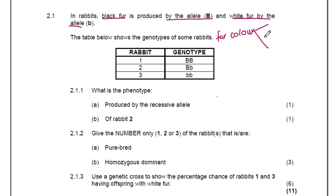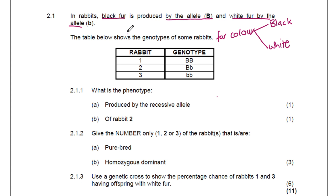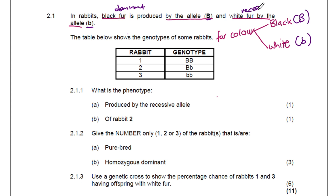Now the alleles, which are the alternative forms of the gene, can either be black or white. The letters given are not just for show — they are there for a reason. The black fur is given a capital letter B and the white fur is given a small letter B. That is telling us that black fur is dominant and white fur is recessive since it has received the small letter. That is very important — those are basics.